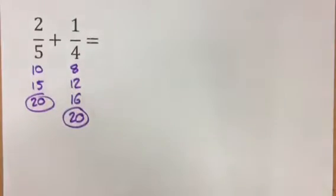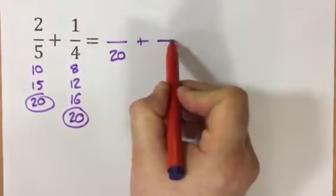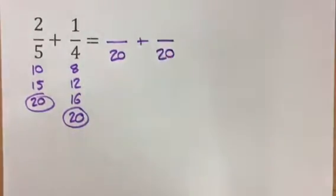Now we've found our lowest common multiple between 4 and 5, which means we can rewrite both of these fractions as being out of 20.